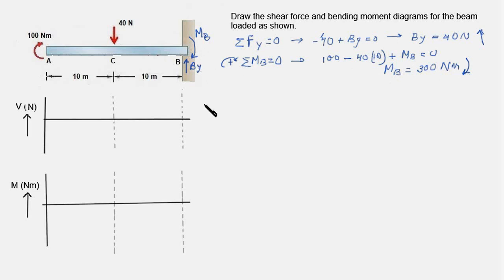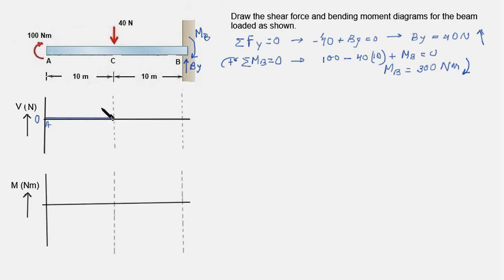Now we proceed to drawing the shear force diagram. To the left of A, the shear force is 0. Moving right, we encounter the 100 Nm couple, but a couple has no impact on the shear force curve, so it continues at 0 up to point C. We draw a horizontal line from A to C. At C, there is a 40 N downward force, so the shear force curve has a negative jump to minus 40.